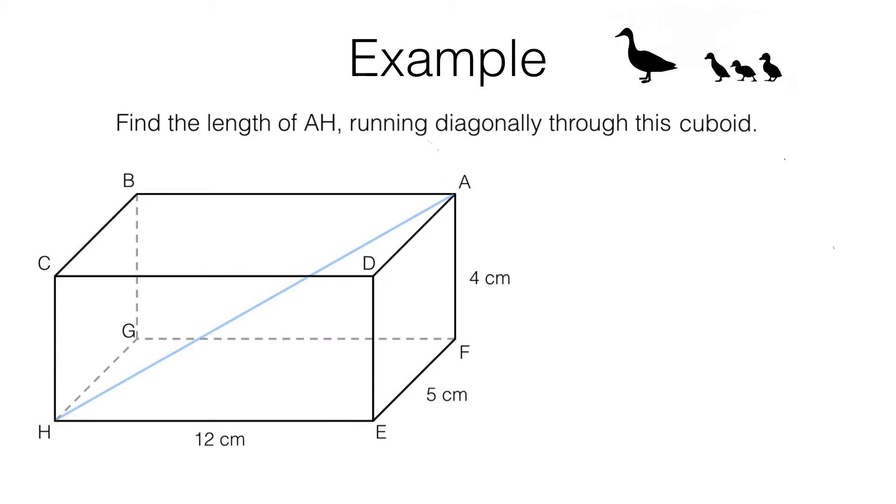We need to spot two right-angle triangles in here. First of all, we've got triangle EFH, which I'll highlight in yellow. Secondly, we've got triangle AHF, which I'll highlight in green.